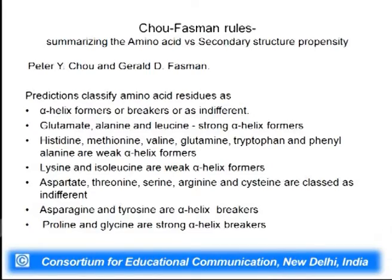To conclude, there is another study very much used in bioinformatics when we are trying to see the propensity of amino acids as they occur in respective secondary or tertiary structures — the Chou-Fasman rules, given in around the 1970s by scientists Peter Chou and Gerald Fasman. These are statistical tools obtained by computational methods summarizing amino acid structural propensities.